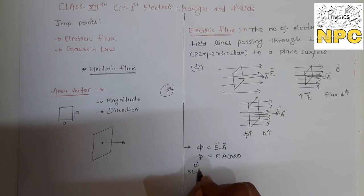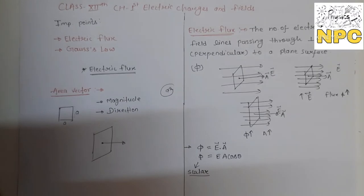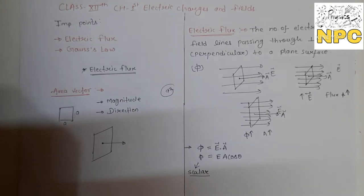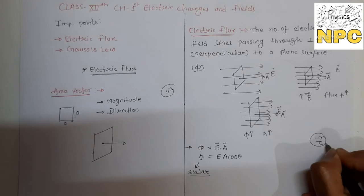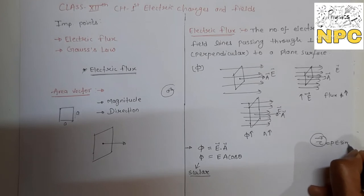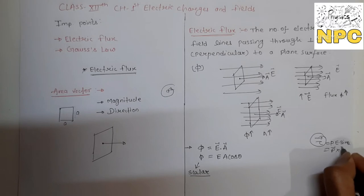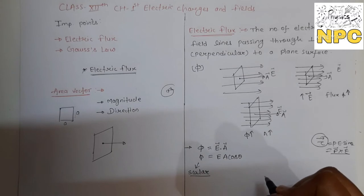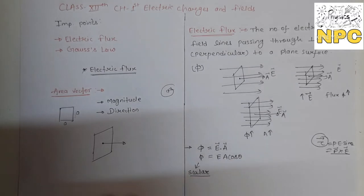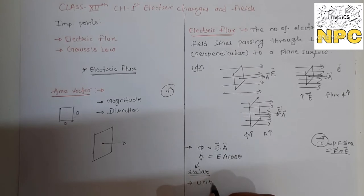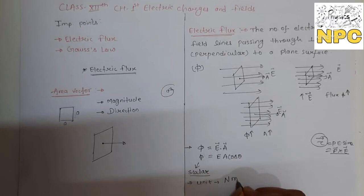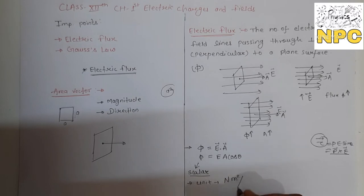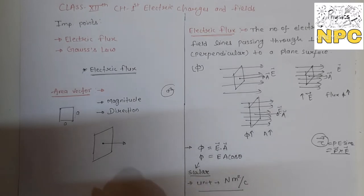The dot product is a scalar quantity, not a vector quantity. For comparison, torque is a vector quantity — we studied PE sinθ, which is P cross E, and the cross product result is a vector. But here, phi = E dot A, so the dot product result is scalar. The unit of electric flux is Newton per Coulomb times meter squared, i.e., N·m²/C.